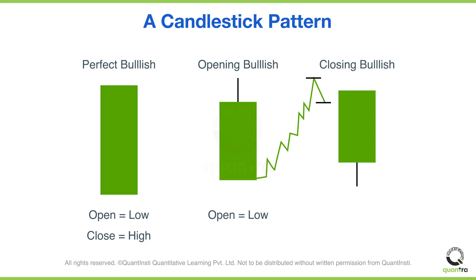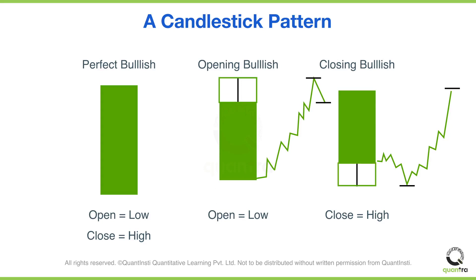In the same manner, if you analyze the third candle, the day started a bit weak and the price went below the open. But during the day the buyers again took over the sellers and the day closed at day high — the close was equal to the high. You would again expect this type of bullish sentiment to carry forward to the next time frame. These types of candles which either have no wick or a very small wick are called marubozu candles.